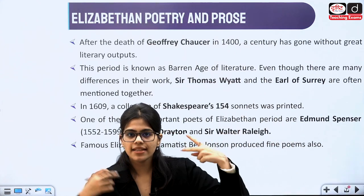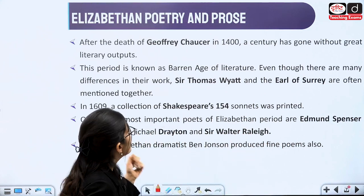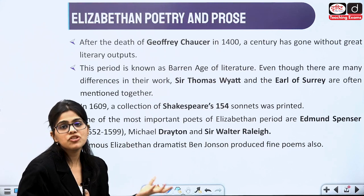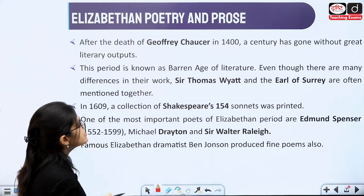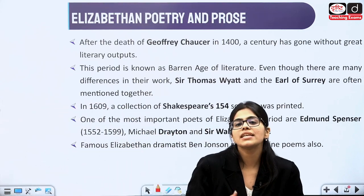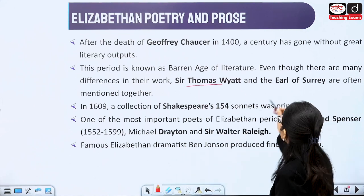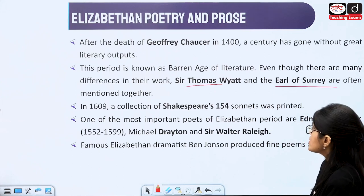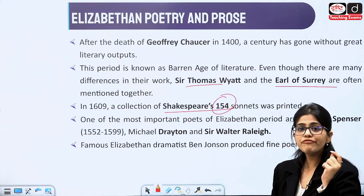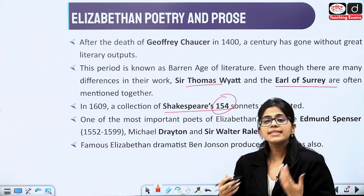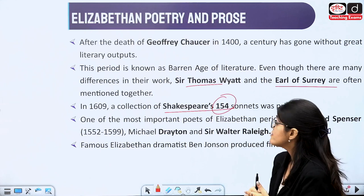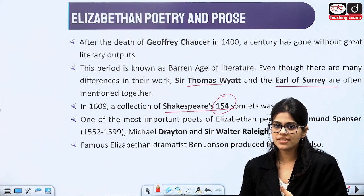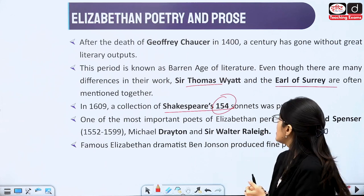After reading about the Saxons and Normans, we will talk about the Elizabethan era — a very important era after the death of Geoffrey Chaucer. Chaucer had his own age. After that came the barren age, when not much was written. Then we have Sir Thomas Wyatt and the Earl of Surrey. After that, in 1609, Shakespeare came and wrote 154 sonnets which were all printed. Shakespeare will become the most important writer and we will study him in detail — all sonnets and plays. We will give you handouts with summaries and important lines asked in the text.